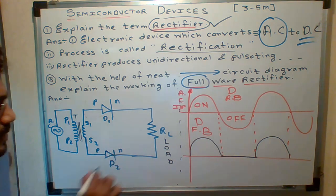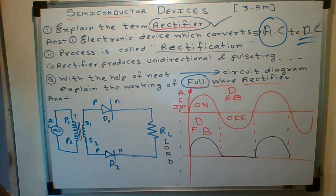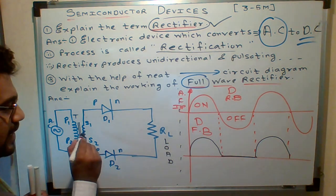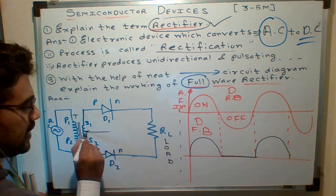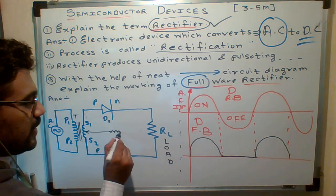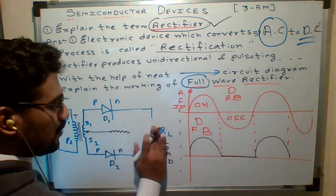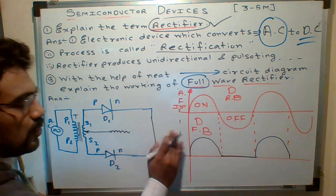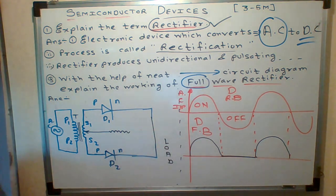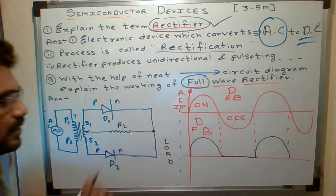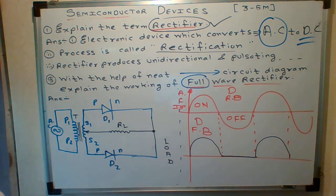This is a PN junction. So we are going to connect two diodes in a full-wave rectifier. Here we will do center tapping — remember, this is center tapping. We connect the load here. So I am removing the load from here and connecting load RL here. These are the changes in a full-wave rectifier.